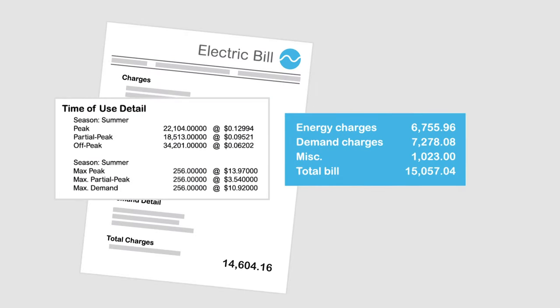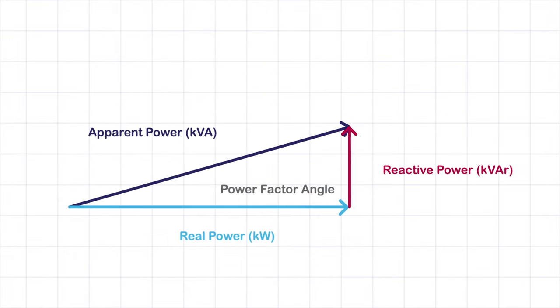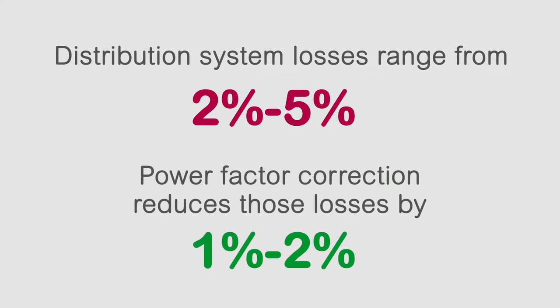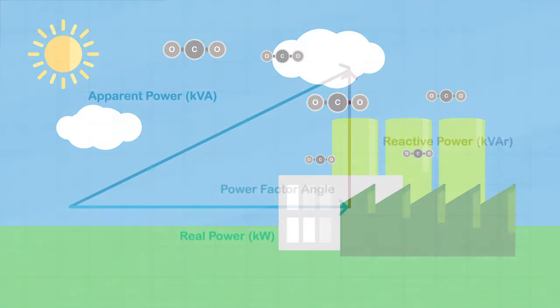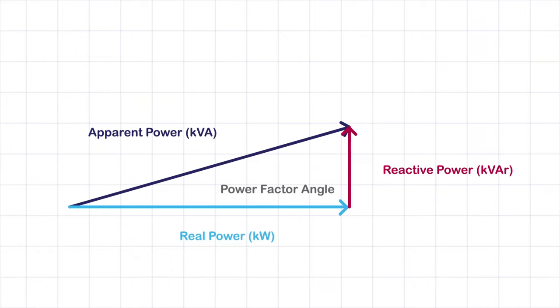It can reduce utility bills by reducing your demand charges which relates to your rate structure. It reduces apparent power therefore reduces loading on your power transformer and distribution network. Reduces I squared R losses. Electrical distribution systems have losses ranging from two percent to five percent. Correcting power factor reduces the losses by one to two percent. Reduces carbon emissions since we reduce the I squared R losses. Improves voltage regulation by correcting the power factor. We reduce the loading on the network therefore reducing the voltage drop across the network impedance.